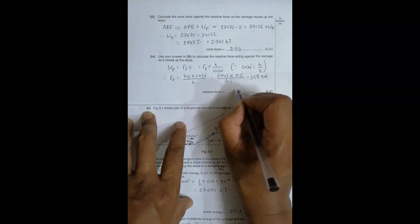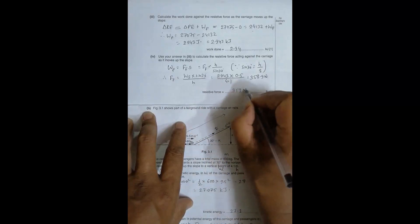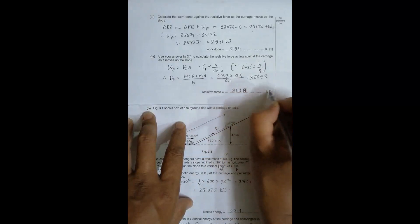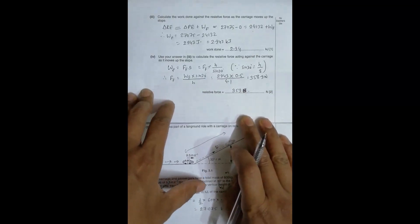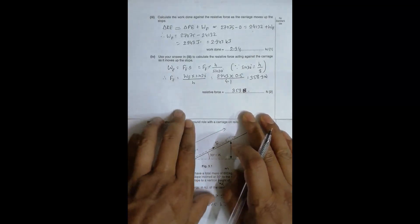When I write it in 3 significant figures, it becomes equal to 359 newtons. I don't need to write Newton here; it's already written in the text itself. So these are the complete answers to this question.